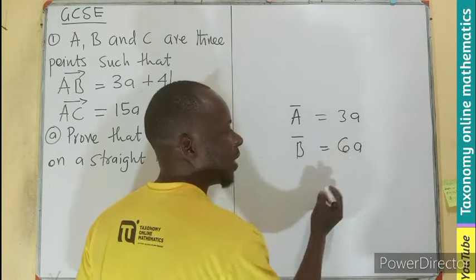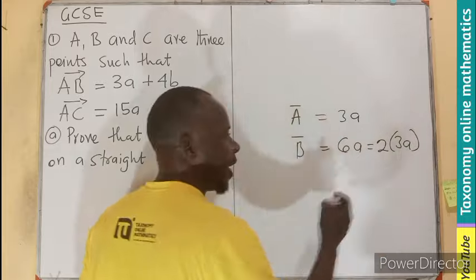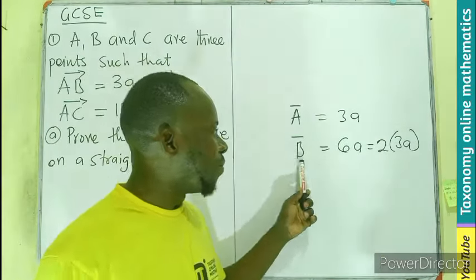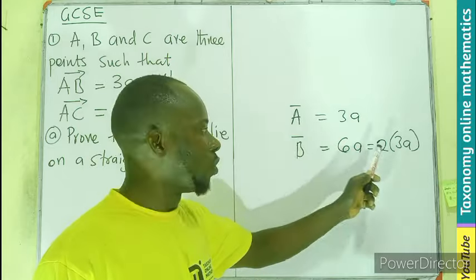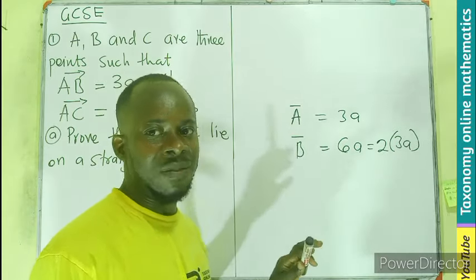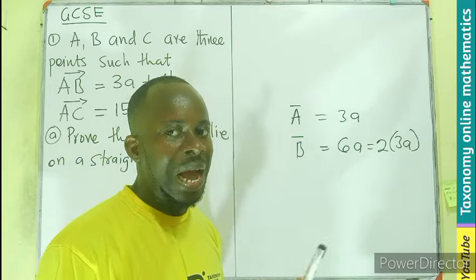This is going to be 6a. I can write this as 2 times 3a. You can see that vector B is a multiple of vector A. 2 times vector A gives us vector B. If we can prove that, then we can say the three points are in a straight line.